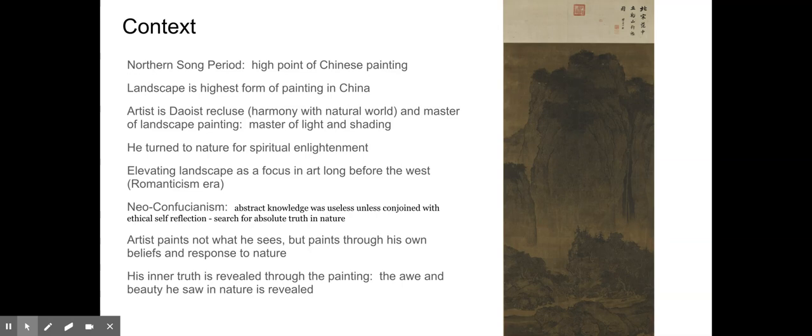Here in China, they're using landscape to express something so much more meaningful. Our artist was a Taoist recluse. In the Taoist beliefs, you find harmony with nature. He was disillusioned with people and the actions of human beings, and sought to find solace, peace, a spiritual kind of experience in nature. He expresses those ideas in landscape painting, turning to nature for spiritual enlightenment.